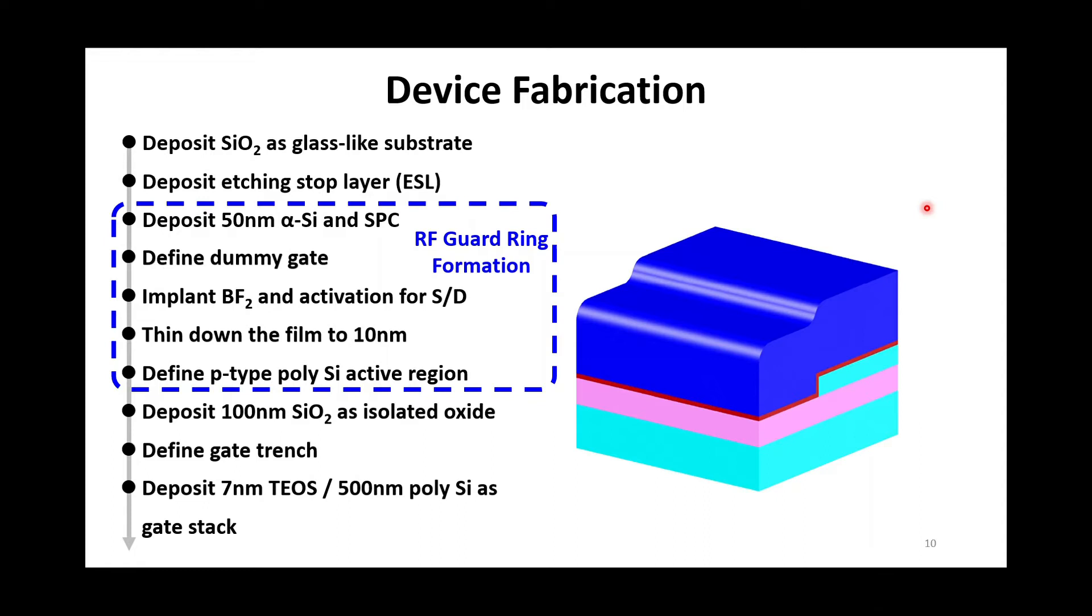As of now, there are three steps are crucial to smooth the topography. One is etching stop layer, another is ultra-thin channel, and the other is filled in extremely thick poly gate. They all are the key processes to flat the surface for the following top transistor formation.